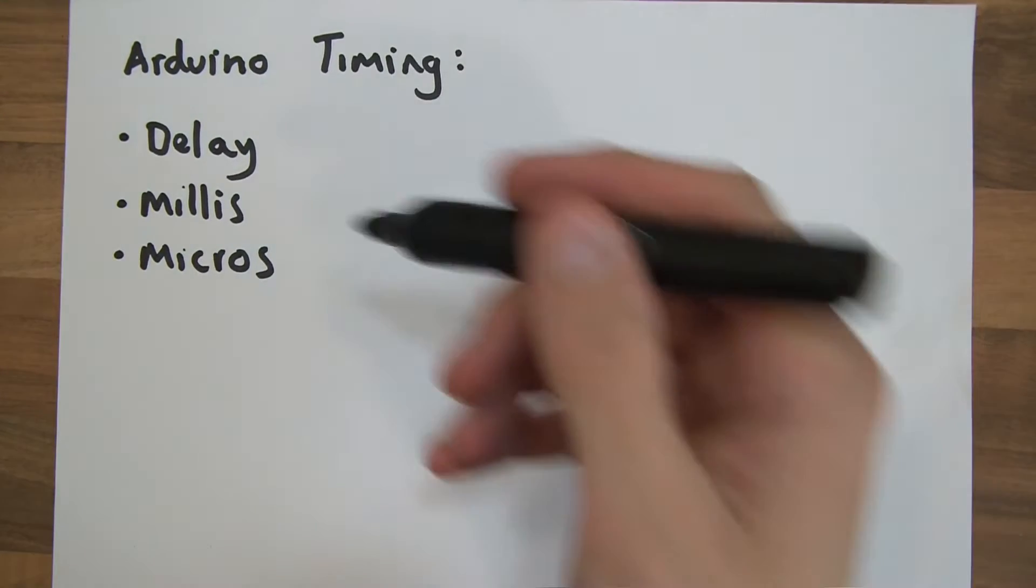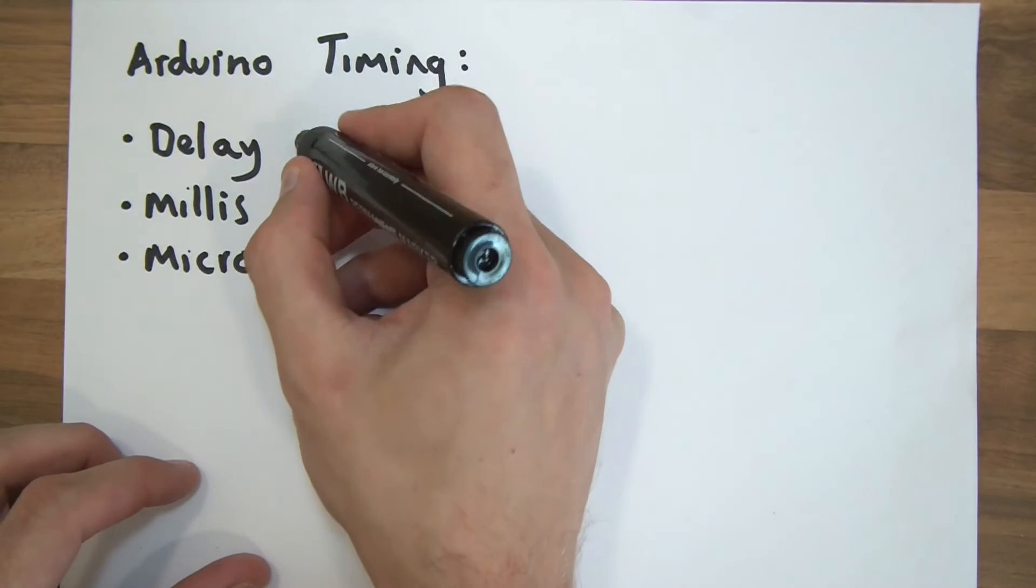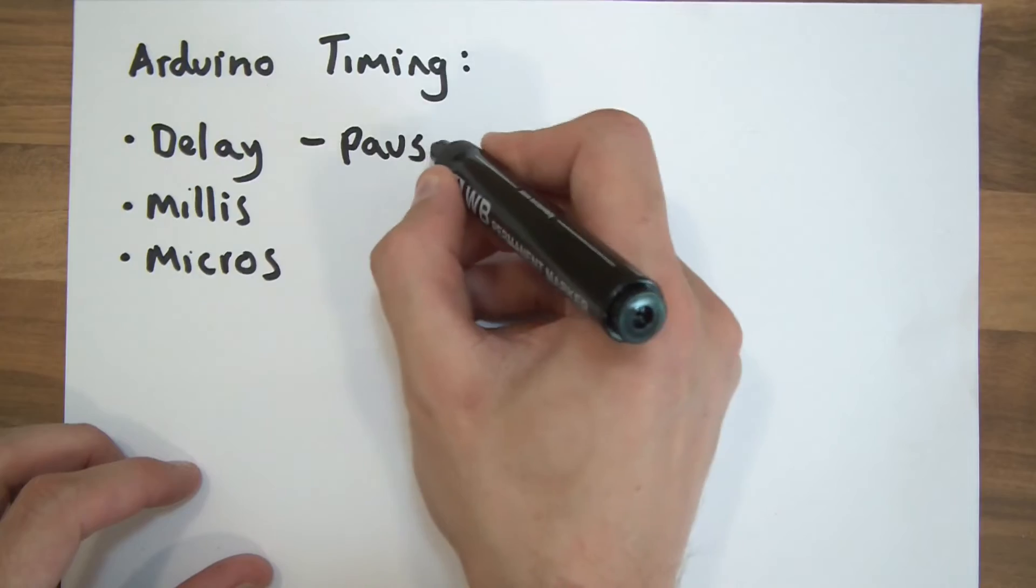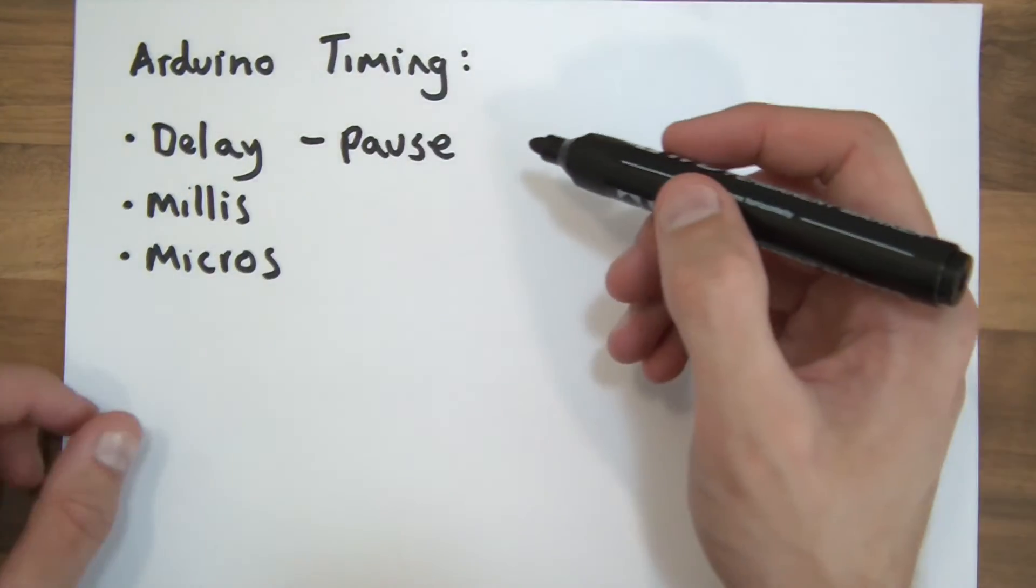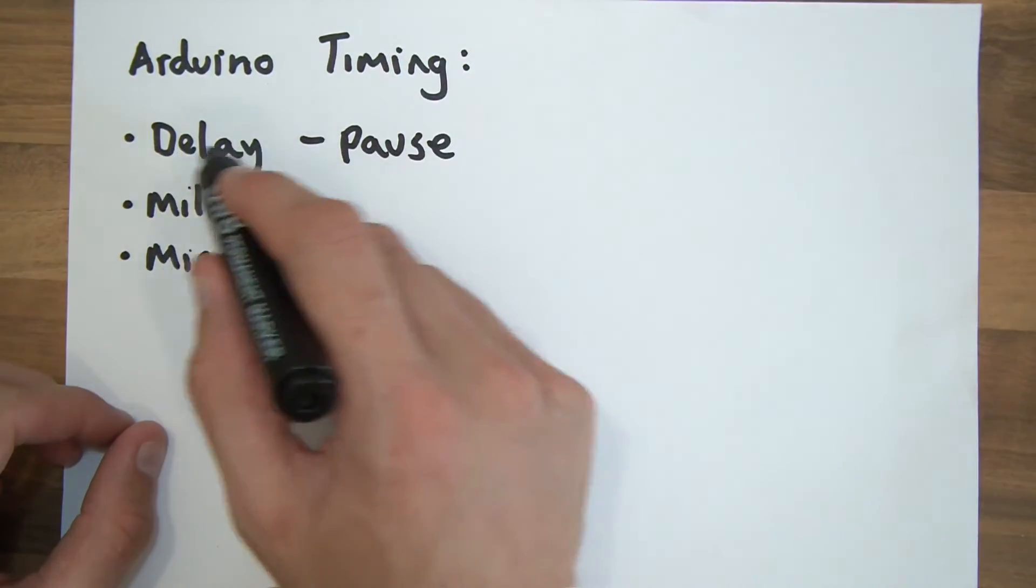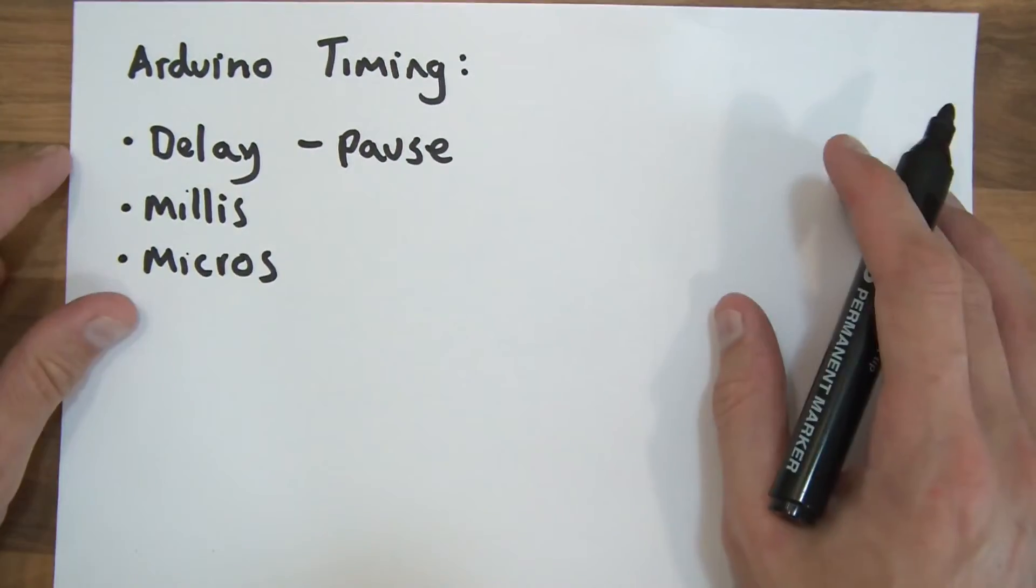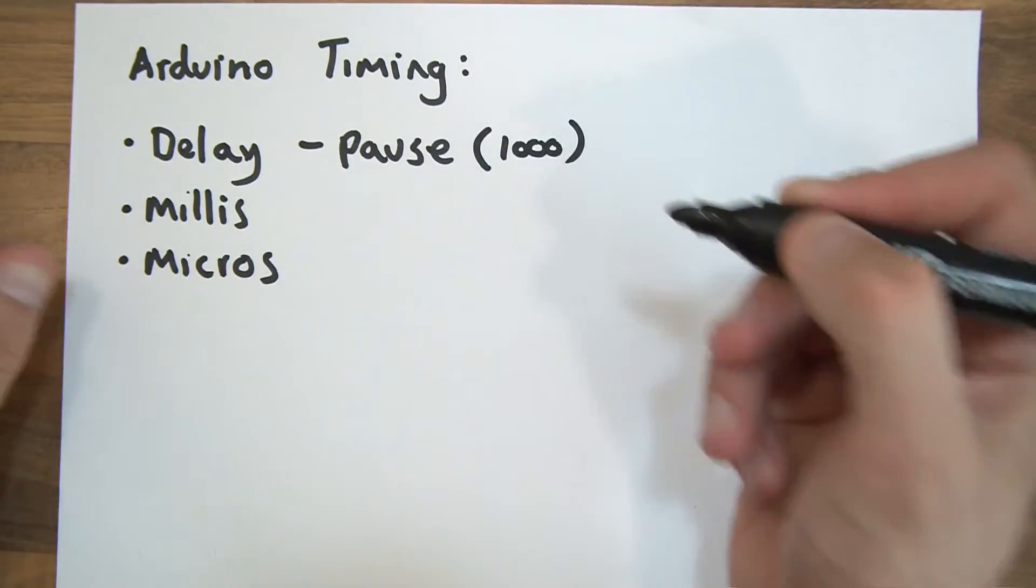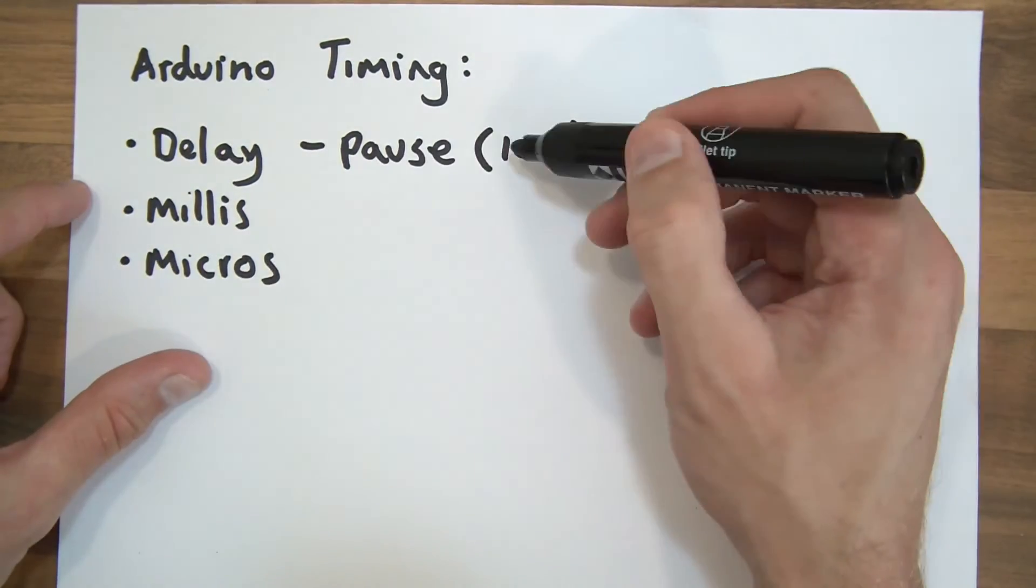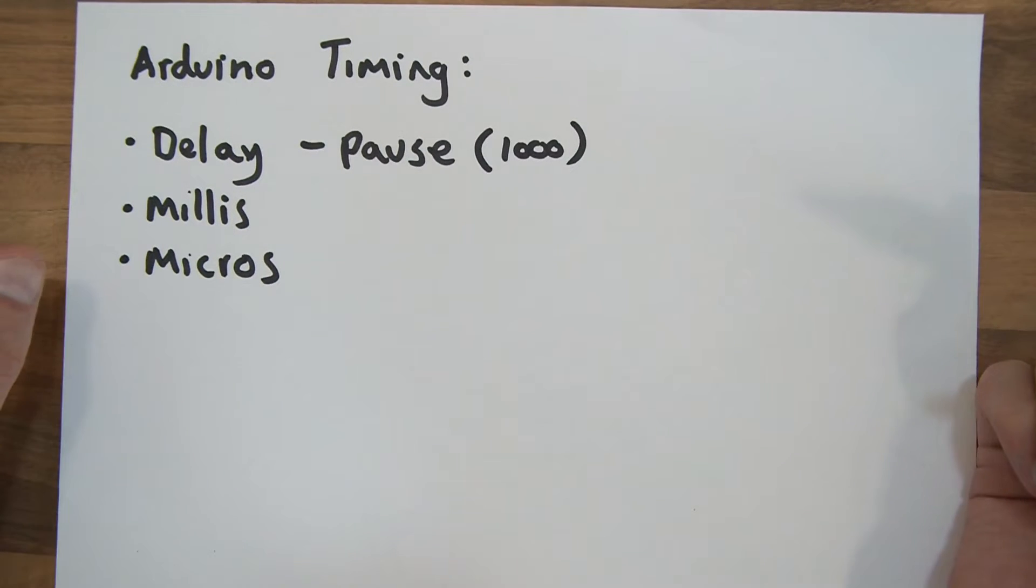So what are these things then? So delay, the keyword delay, it's actually pause really, it's like pause. So if you've got a sketch or a script and you add in the delay keyword, it basically pauses the whole thing, the whole program for however many milliseconds you say. So if you say delay with 1000 in parentheses, it will pause the whole program for 1000 milliseconds or one second.